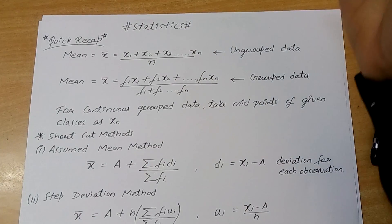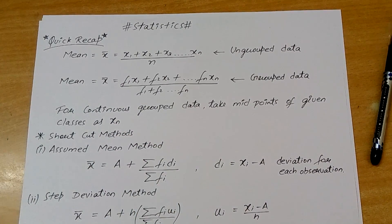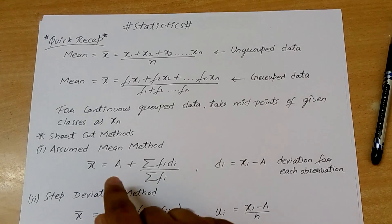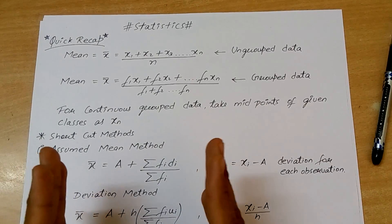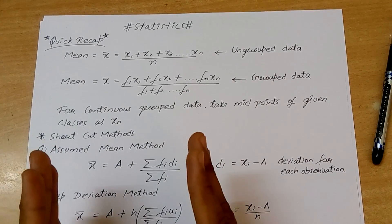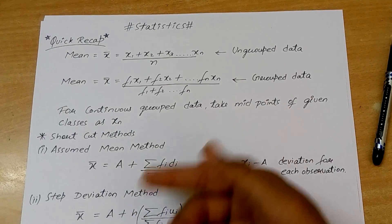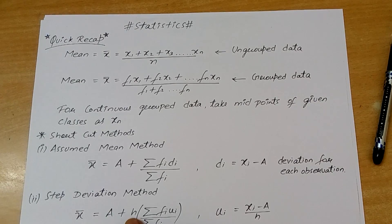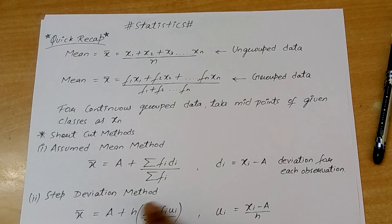For large frequencies we have shortcut methods. The first method is the assumed mean method. In this method we take a value 'a', which is very helpful. We shift the number scale from its original point to 'a' as the origin. The step deviation method is just the evolved version of this — we have 'h' as a common factor in our observations, we take it out, calculate, and apply it later in the formula.